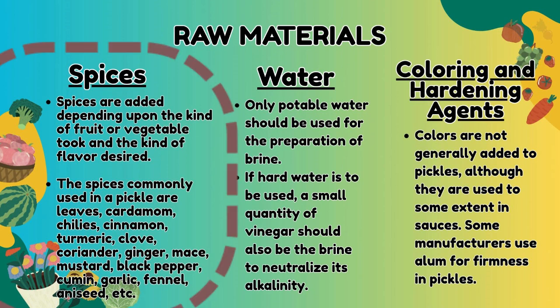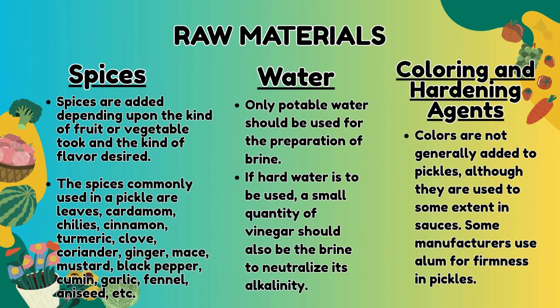Spices are added depending upon the kind of fruit or vegetable used and the kind of flavor desired. The spices commonly used in pickle are bay leaves, cardamom, chilies, cinnamon, turmeric, clove, coriander, ginger, mace, mustard, black pepper, cumin, garlic, fennel, anise, etc.